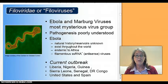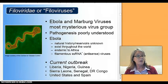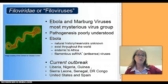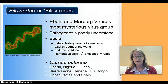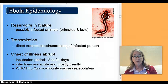Ebola has a natural history of having animal reservoirs — they think it could be spread by monkeys or bats. The current outbreak was in Liberia and Nigeria. It spread to Nigeria because people from other poorer countries in West Africa traveled there to get better health care. It also appeared in Sierra Leone, Senegal, Democratic Republic of Congo, the United States, and Spain. The reservoirs are not well identified, but primates and bats are assumed to be among the carriers.